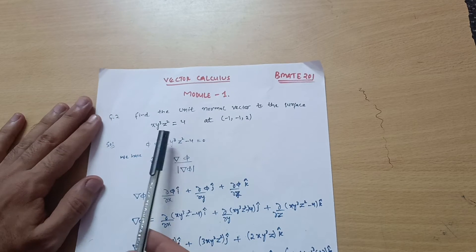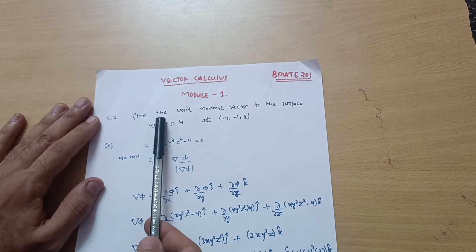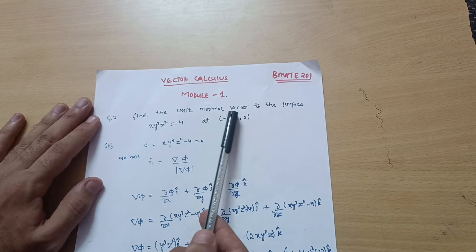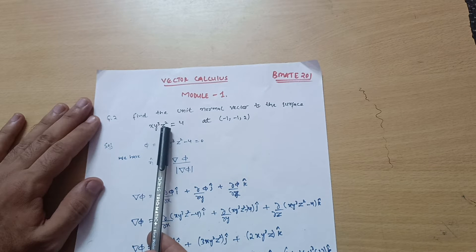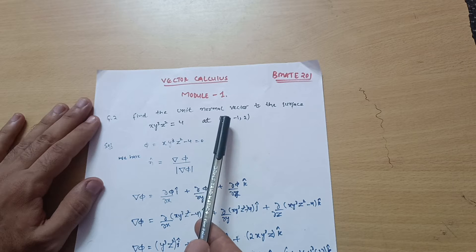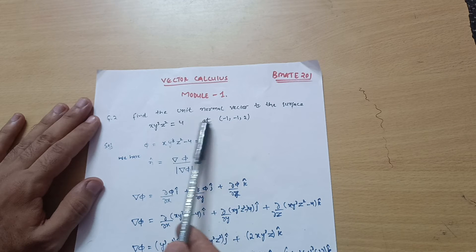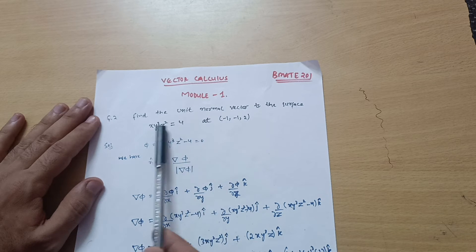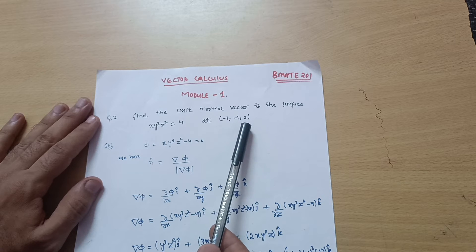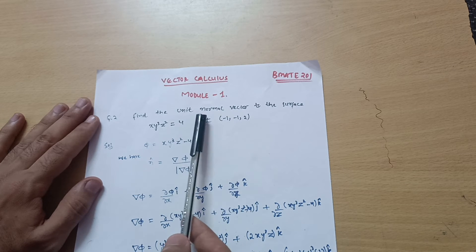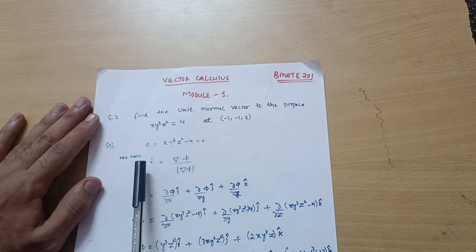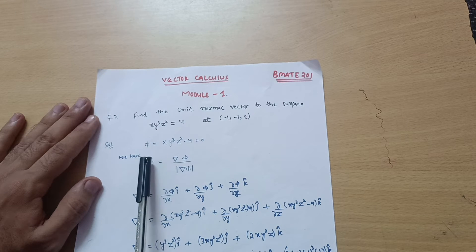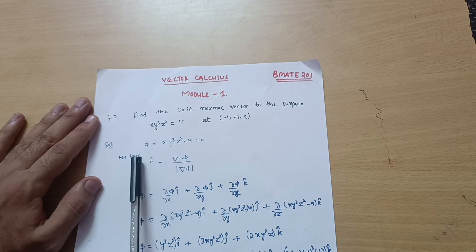Today I will solve another question: find the unit normal vector to the surface xy³z² = 4 at the given point, where x = -1, y = -1, and z = 2. We are supposed to calculate the unit normal vector.